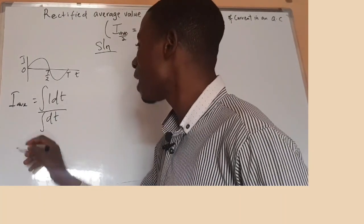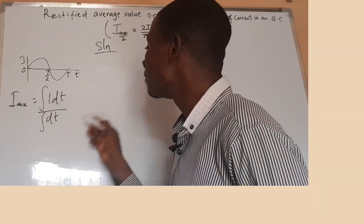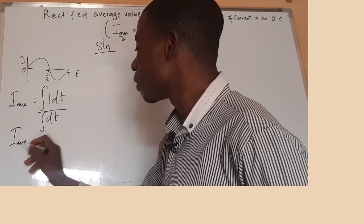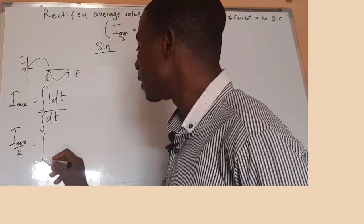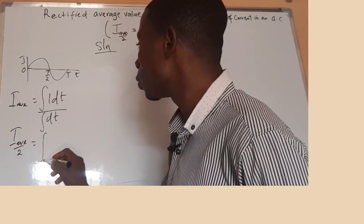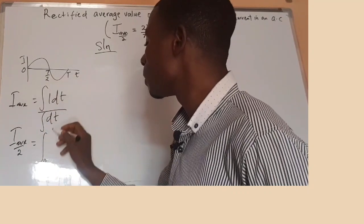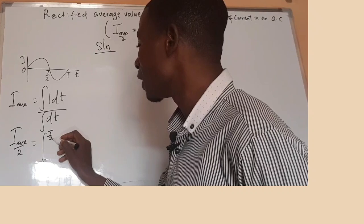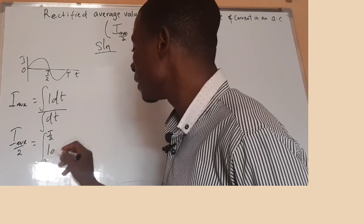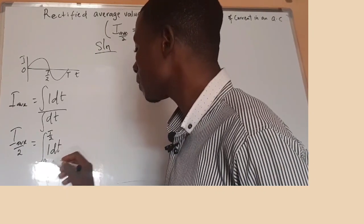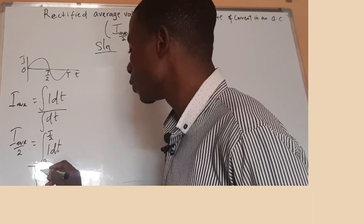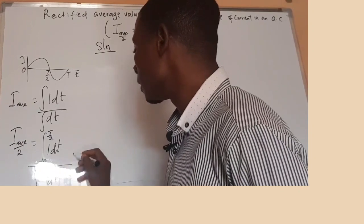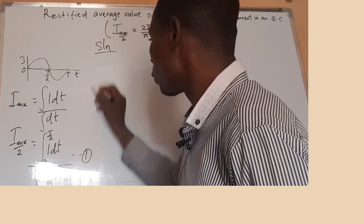So today, as we're looking at the half average value, it will be I half, then the integral limits will now be zero to T over two — no longer zero to T, but zero to T over two. So we have the integral from zero to T over two of I dt, all over the integral from zero to T over two of dt. This should be equation one.